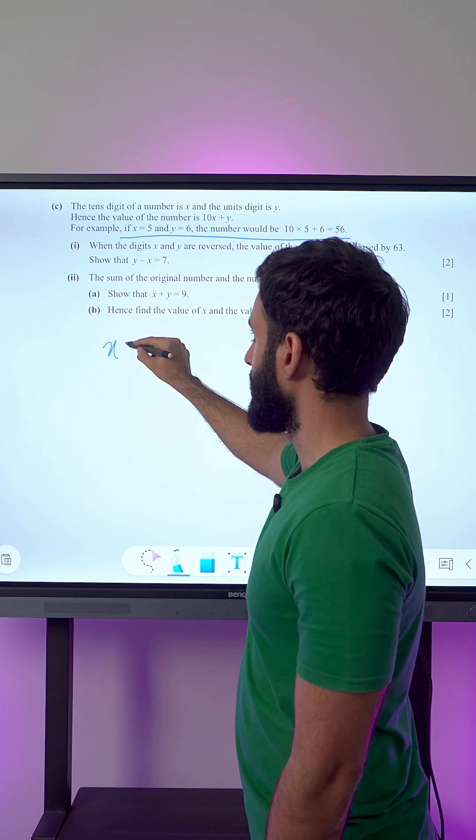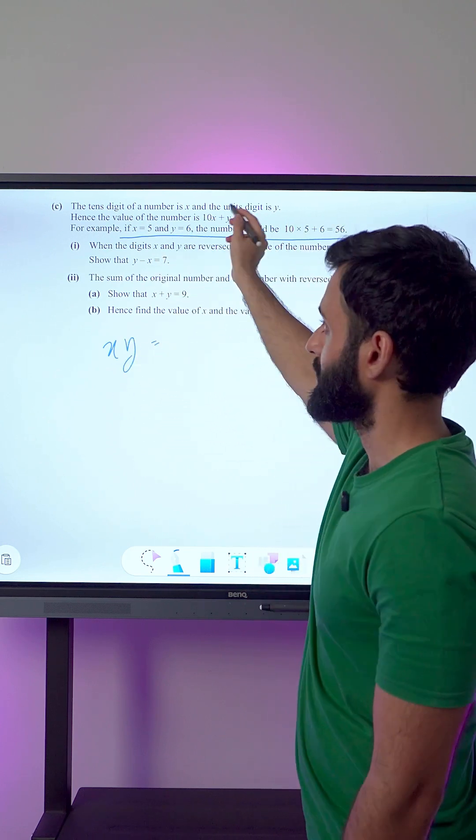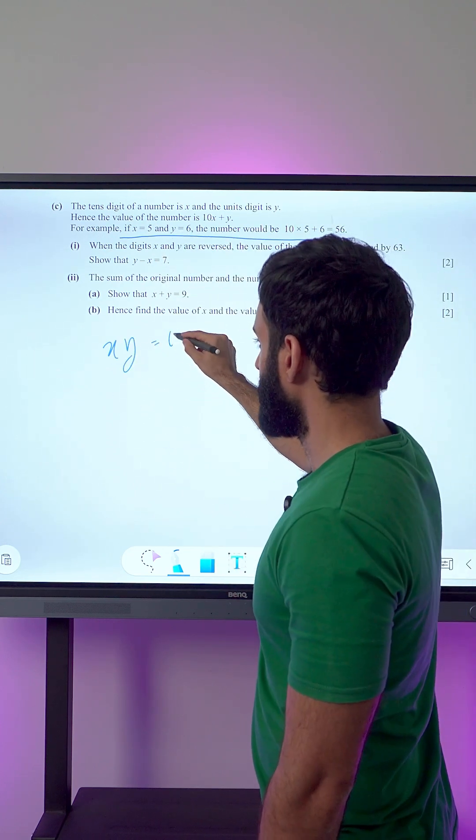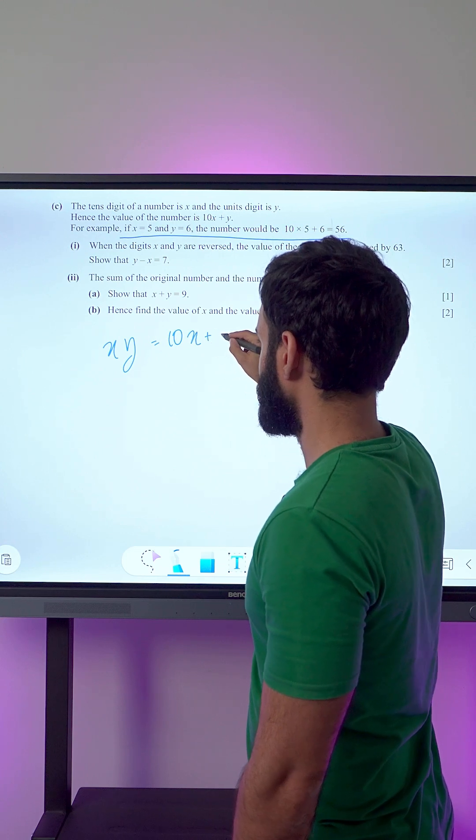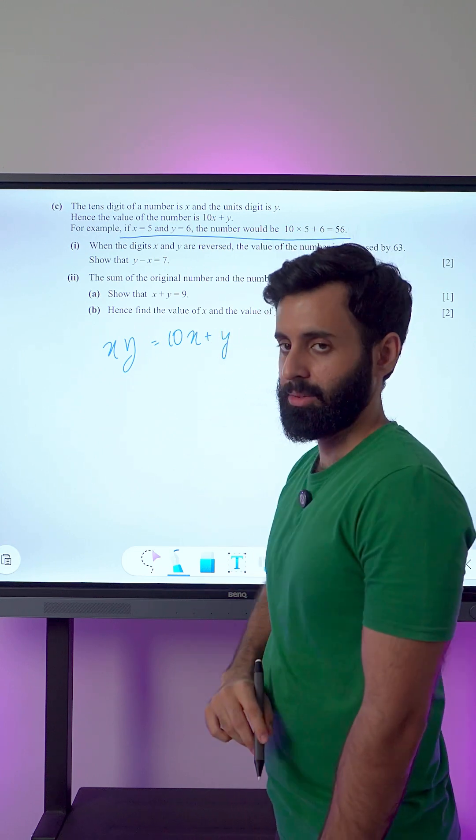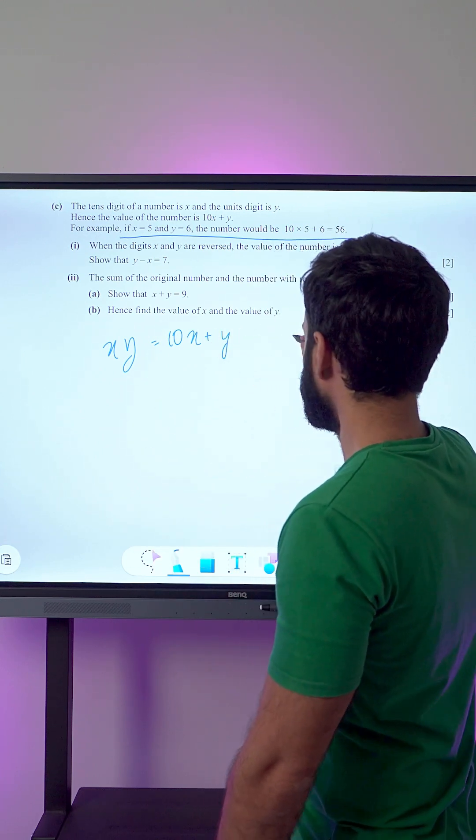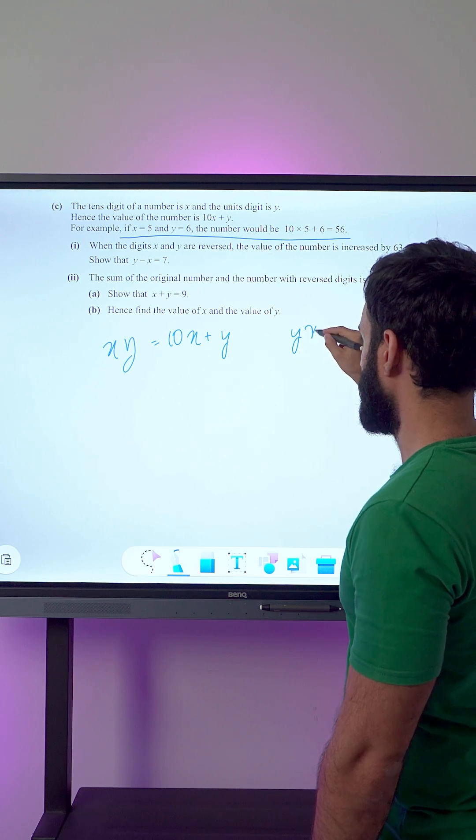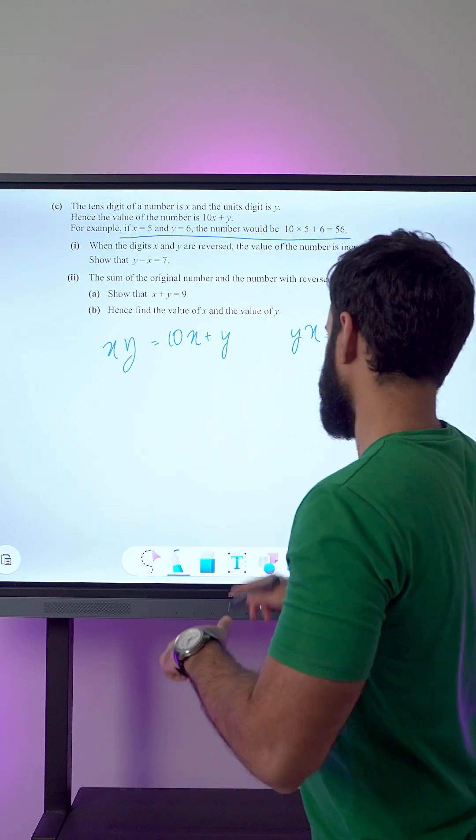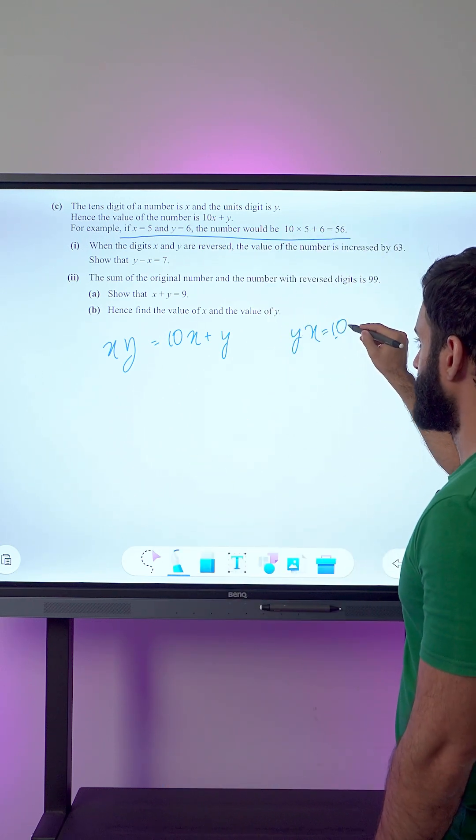Let's say that the number we have is xy. To work out its value, we multiply the 10th digit by 10 and add the unit's digit. If we reverse the digits, making the 10th digit y and the unit's digit x, this is now 10y plus x.